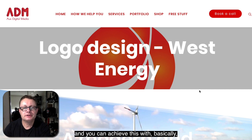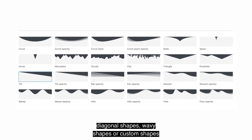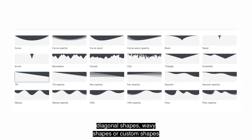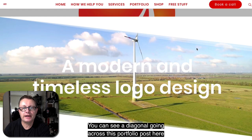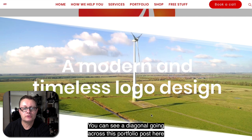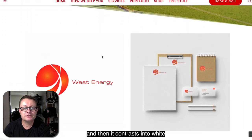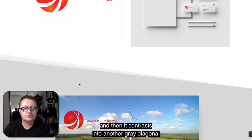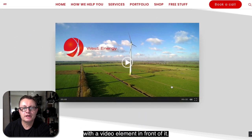You can achieve this with basically diagonal shapes, wavy shapes, or custom shapes throughout your website layout. You can see a diagonal going across this portfolio post here, and then it contrasts into white, and then it contrasts into another grey diagonal with a video element in front of it.